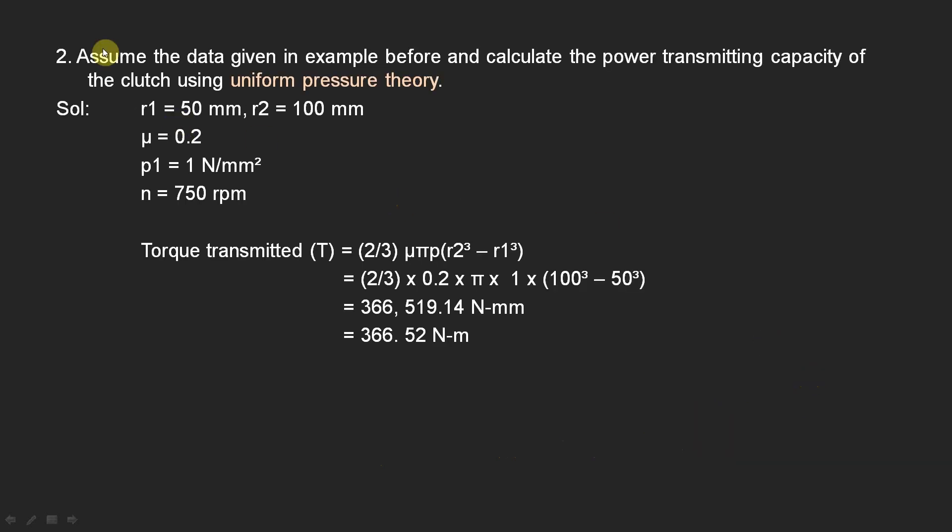Second example: assume the data given in the example before and calculate the power transmitting capacity of the clutch using uniform pressure theory. So, same data, and we have to do it with uniform pressure theory.